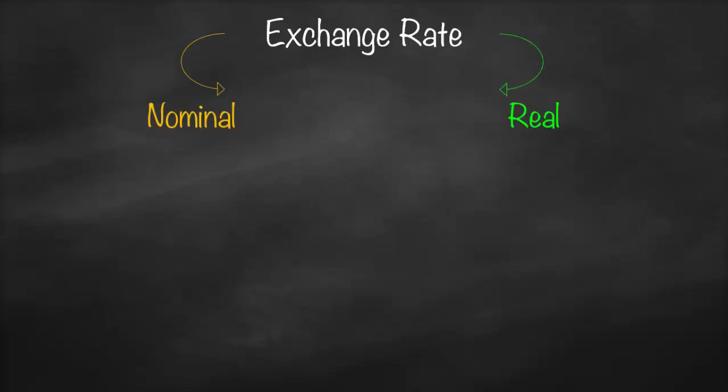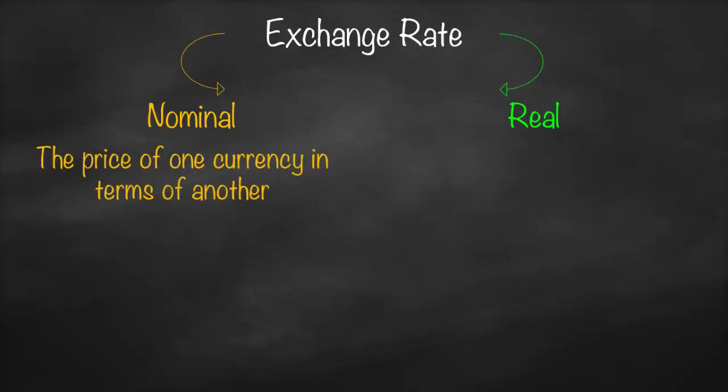What do we mean by nominal exchange rate? This is the exchange rate you find in any bank, such as Commonwealth Bank, St. George Bank, or NAB Bank. It refers to the price of one currency in terms of another currency, such as 0.8 euro per 1 Australian dollar. This is what's reported by banks.